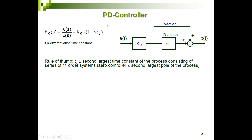The PD controller has a transfer function where the output divided by the input equals KR times (1 + S·tau_d). KR times 1 is the proportional part, and KR times S·tau_d is the differentiating part — the S is the Laplace transform of a derivative. Tau_d is the time constant of the D part. The error is the input, fed through the proportional gain KR, and KR times S·tau_d provides the derivative action.